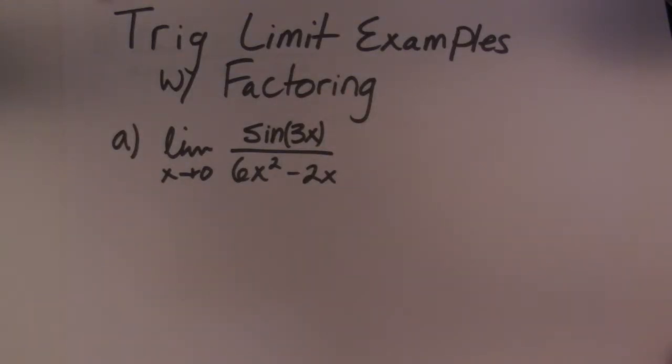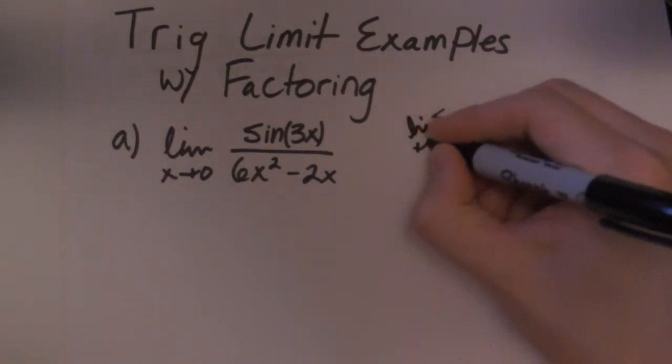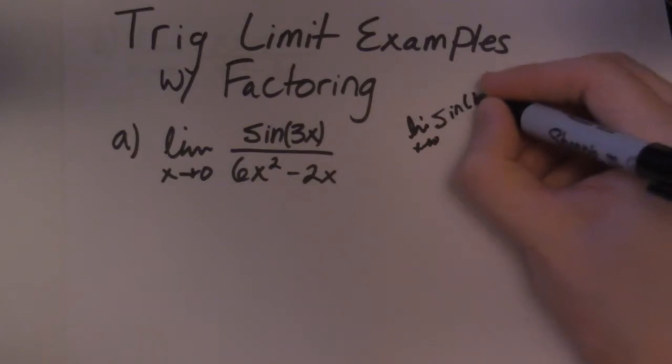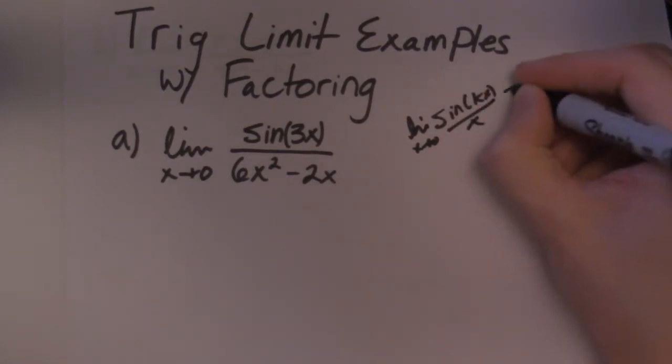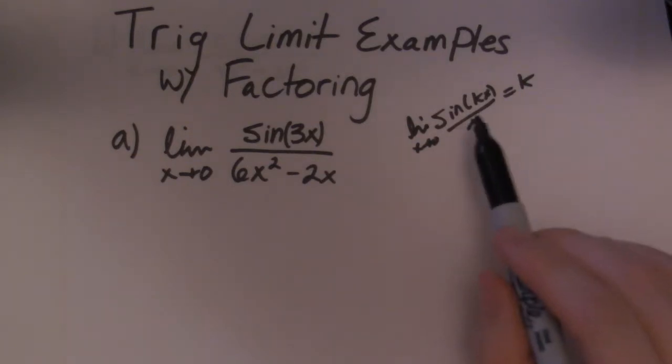Alright, so this video I'm going to do some trig limit stuff. And I've already done trig limits when we use sin(kx) over x. We're probably still going to have to use this guy, so the limit as x goes to zero sin(kx) over x is equal to k. But particularly, I'm going to do this video on when you have to factor in order to achieve that.